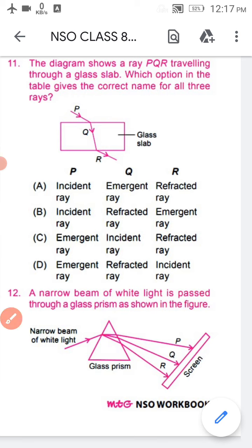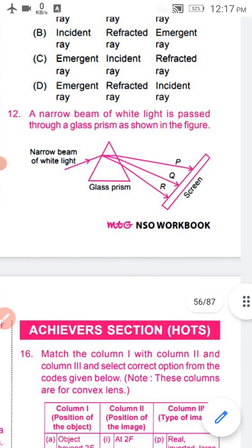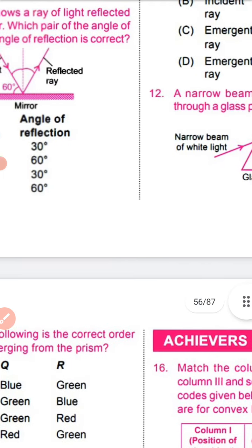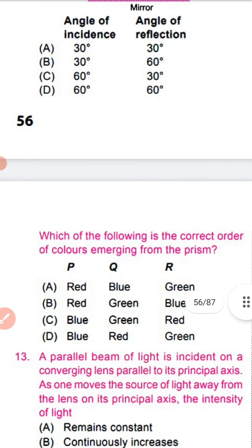Now come to question number 12. A narrow beam of white light is passed through a glass prism as shown in the figure. Which of the following is the correct order of colors emerging from the prism? The options are: red, blue, green; red, green, blue; blue, green, red; or blue, red, green.